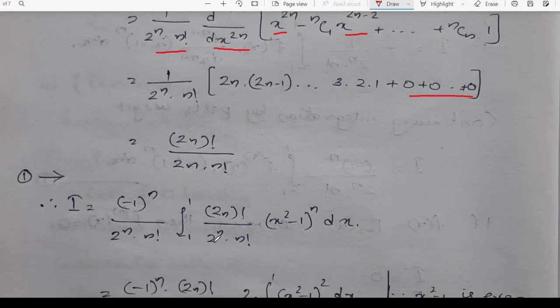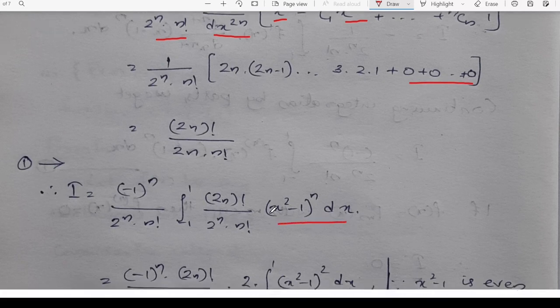So Fn of x is substituted with minus 1 raised to n by 2n into n factorial, multiplied by 2n factorial by 2 raised to n into n factorial, into x squared minus 1 whole raised to n dx.